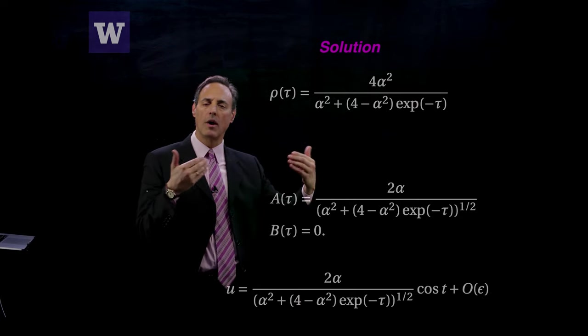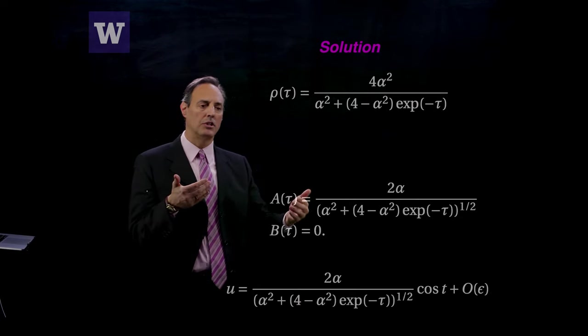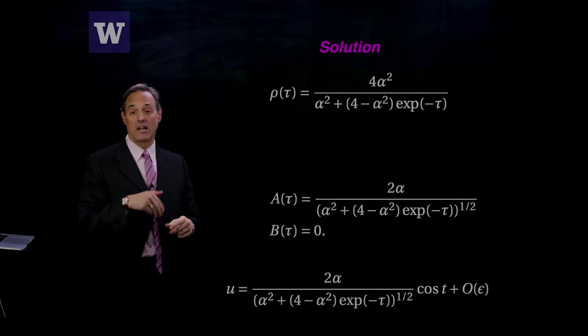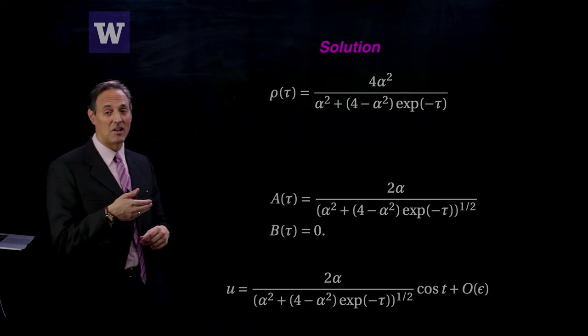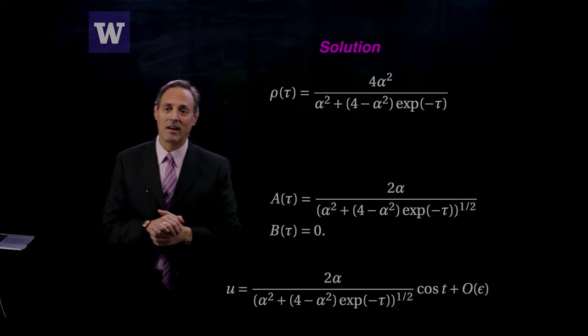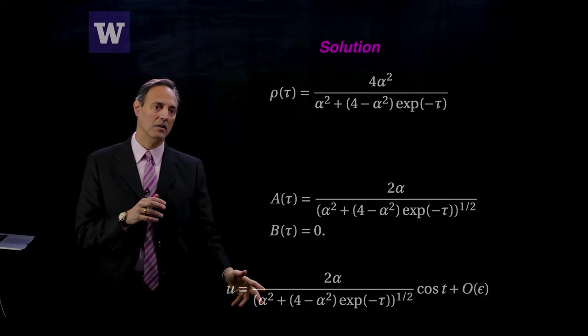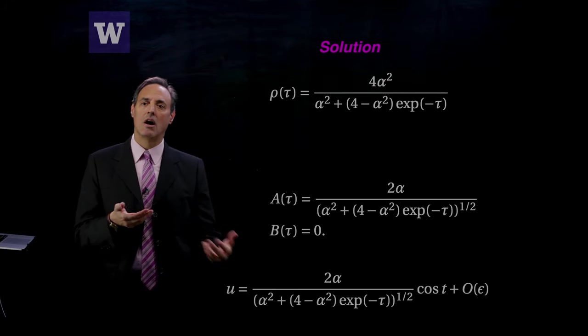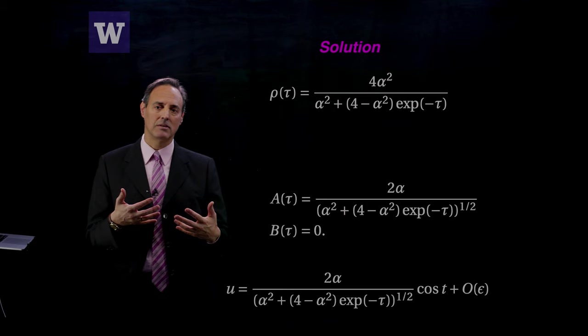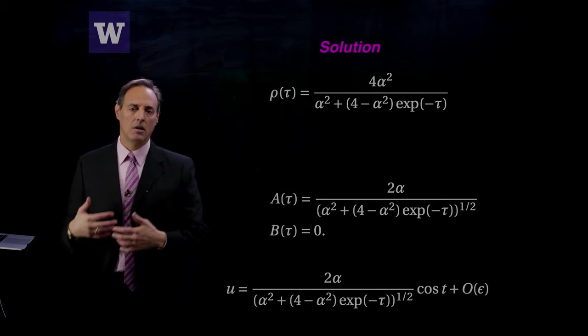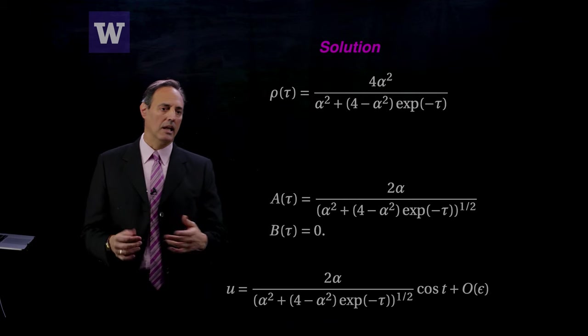If you wanted to compute the frequency correction, you'd have to go to a higher order to get that and get an epsilon squared correction to the frequency. But that is a lot of extra work. I just want to illustrate here that multiple scales offer you more flexibility than either the regular perturbation expansion or Poincaré-Lindstedt. It can handle transients, it can handle frequency shifts.